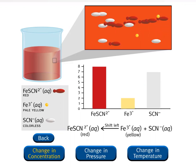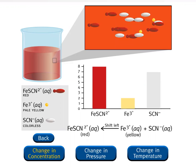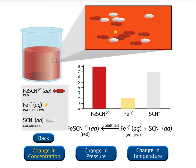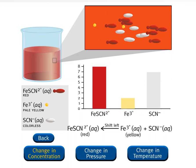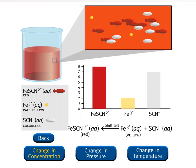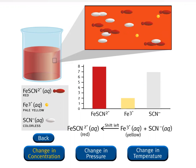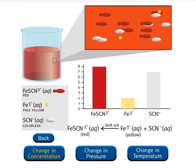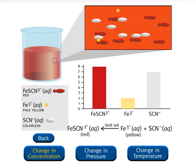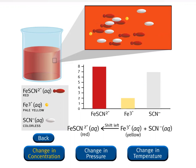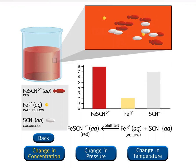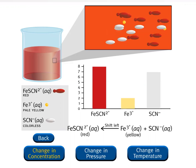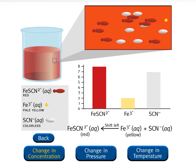When the system shifts to the left, iron thiocyanate ions are produced, which have a red color. Consequently, the red color of the solution deepens as more iron thiocyanate ions, Fe(SCN)²⁺, are produced. Note that the sodium ions are not shown in the simulation because they are spectator ions.